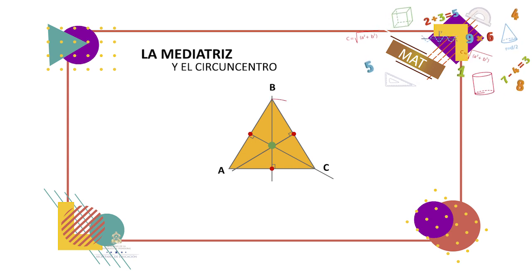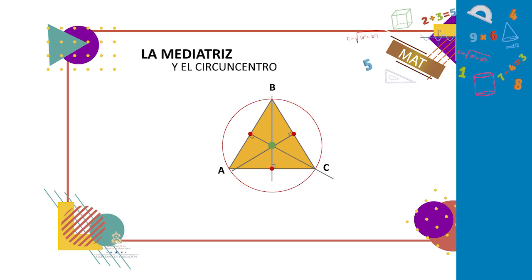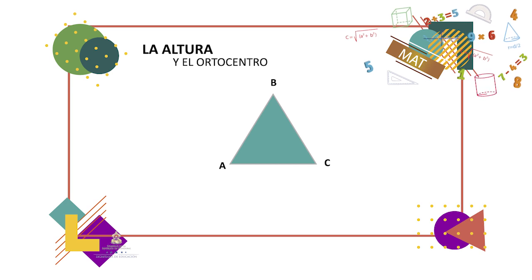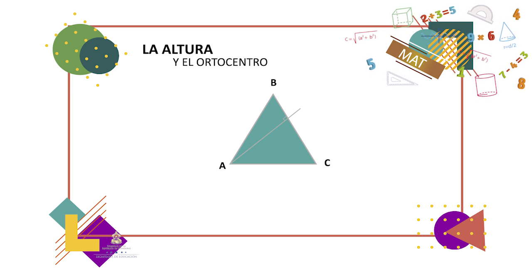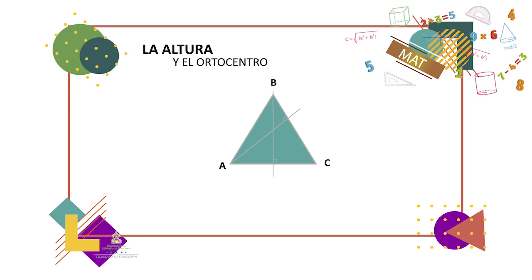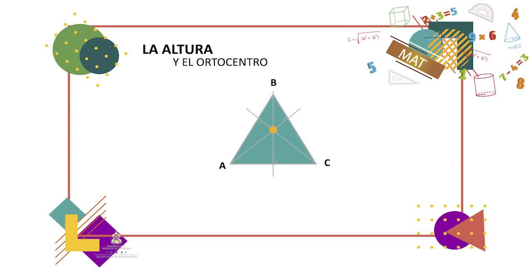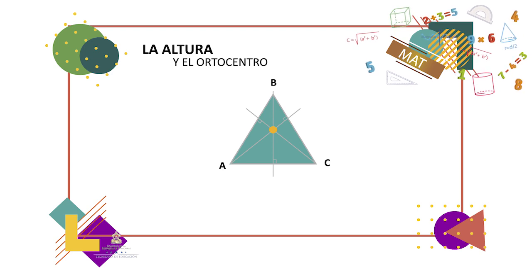A ese punto de intersección se le llama circuncentro, o sea el centro de la circunferencia circunscrita al triángulo. Se llama altura de un triángulo al segmento perpendicular trazado por un vértice del triángulo, comprendido entre ese vértice y su lado opuesto. Comenzaremos trazando la altura desde el vértice A hacia su lado opuesto, formando la perpendicular en el lado opuesto del vértice. Continuamos trazando la altura desde el vértice B y por último trazamos la altura desde el vértice C hacia su lado opuesto. Las alturas se han intersectado en un punto, a ese punto de intersección se le llama ortocentro, y es uno de los puntos notables de un triángulo.